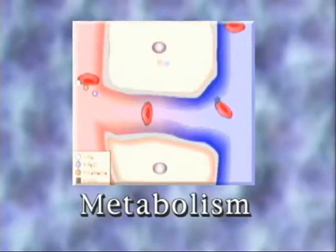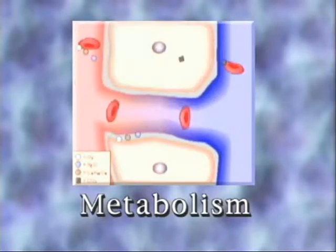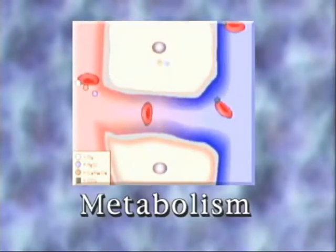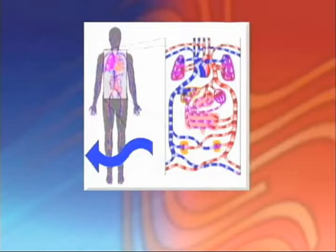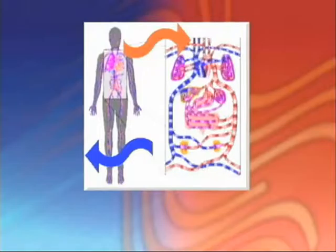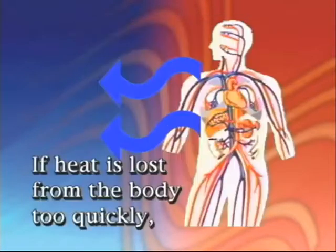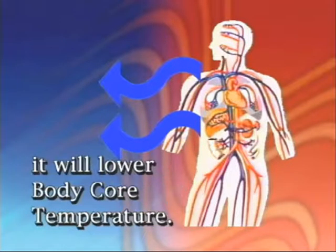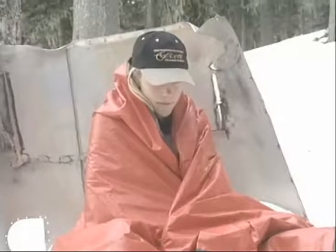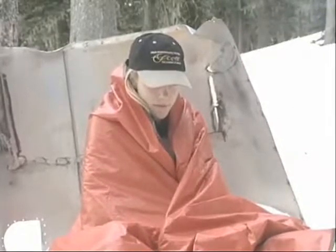Through the process of metabolism, the body core maintains an average temperature of 98.6 degrees Fahrenheit. As long as heat loss does not exceed heat buildup, the body will function normally. However, if heat is lost from the body too quickly, it will lower body core temperature. As the body core temperature drops, so does mental and physical efficiency.